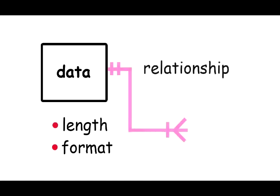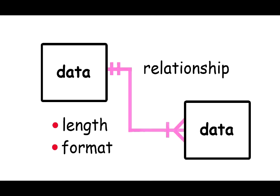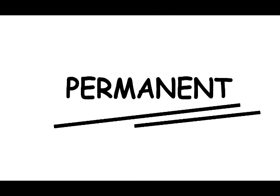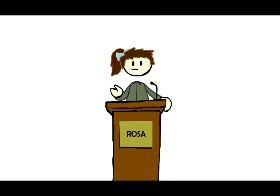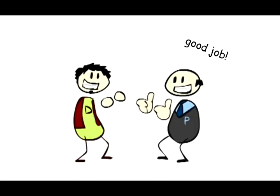Third, the characteristics about data — such as length, format, and relationships with other data — are reasonably permanent. An information system designed based on a data orientation rather than a process or logic orientation should have a longer useful life.